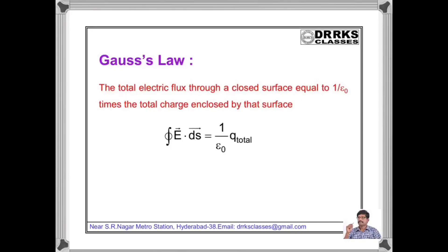Now I will give the statement of Gauss law. The electric flux passing through a closed surface is equal to (1/ε₀) times the total charge enclosed by that surface. That is, integral of E dot ds = (1/ε₀) times the charge enclosed by that surface.